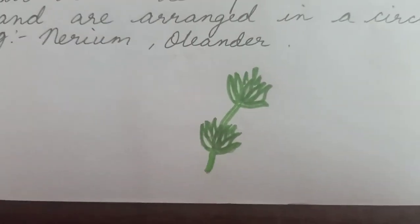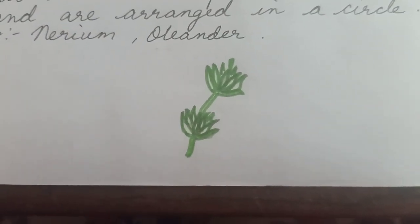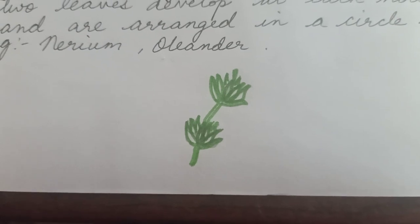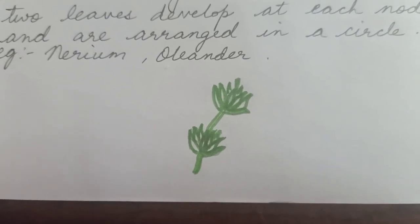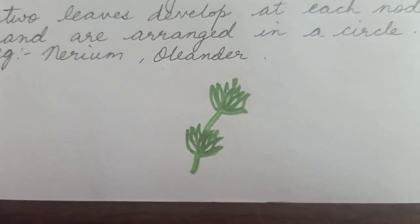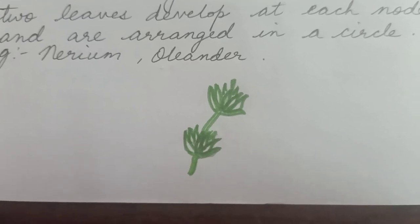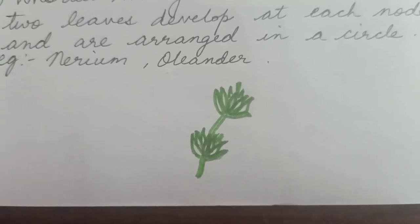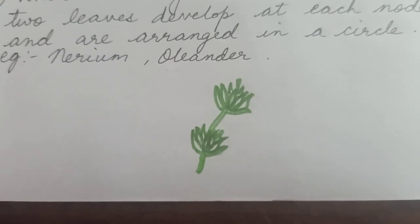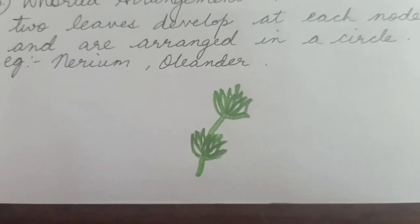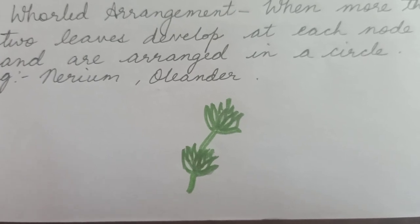You can see in the picture of whorled arrangement that from one node there are more than two leaves, all present in a circular direction. This kind of leaf arrangement is known as whorled arrangement, and this can be seen in the plants nerium and oleander.